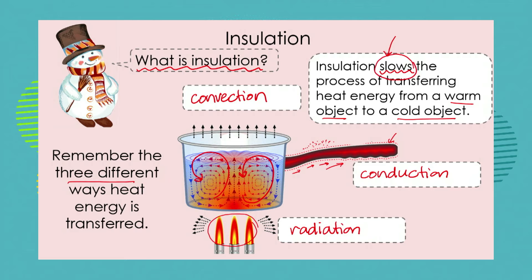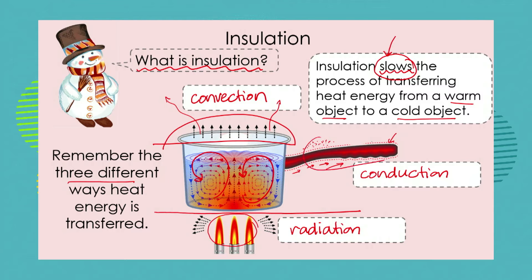Insulation is going to block or slow that process of transferring heat energy. So blocking off our gas fire, or putting a lid on, might prevent waves of heat being lost from our pot. Doing something to the handle — maybe building it out of a substance that doesn't conduct energy as well — this is the process of insulation. So we can look at two opposite processes: the process of heat energy transfer, and when we want to block that heat energy transfer, we call it insulation.